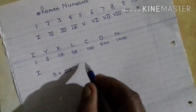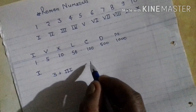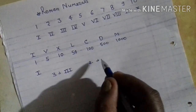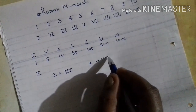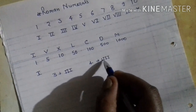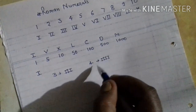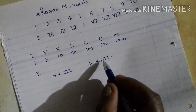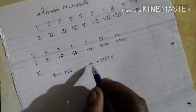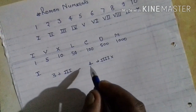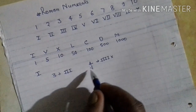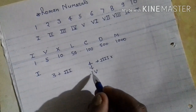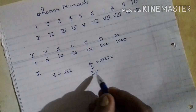Suppose we want to write 4. Writing I four times is wrong — we cannot write I 4 times. If we want to write 4, we can write it in this manner.